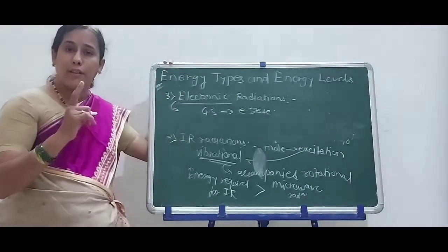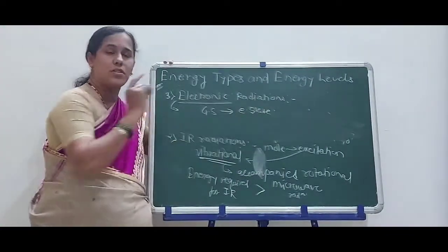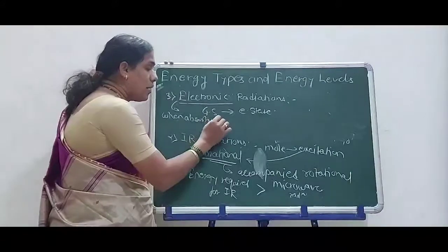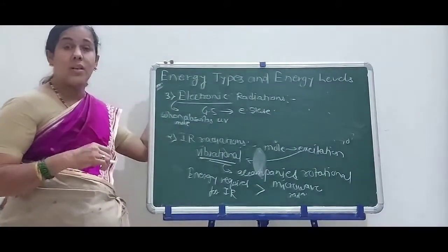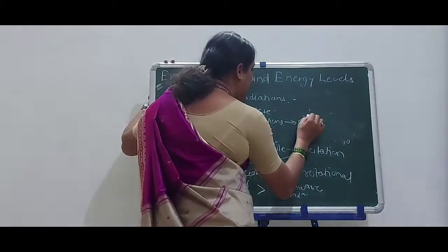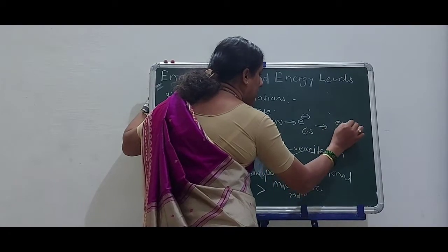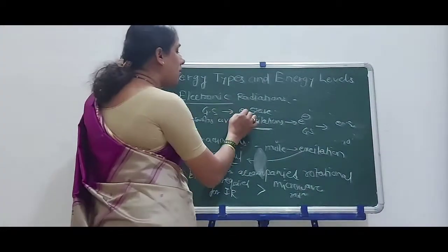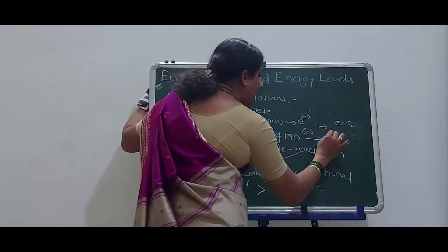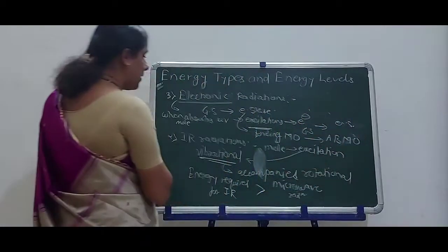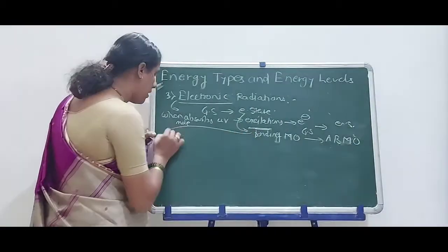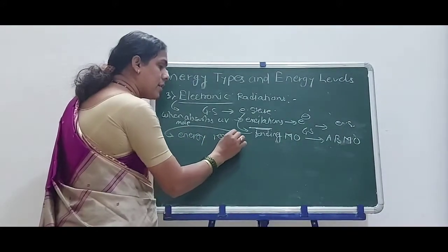When a molecule absorbs UV radiations, it undergoes excitation — the electron can undergo transition from the ground state level to an excited state level, also called the higher energy state. That is, the electron moves from the bonding molecular orbital to its anti-bonding molecular orbital. The energy required for this step is very, very high.